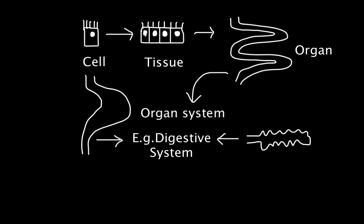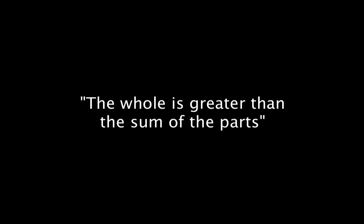Now in this example, what the digestive system can do is far, far greater than what any one of its singular cellular parts can do. So often, emergent properties are explained by saying that the whole is greater than the sum of its parts.